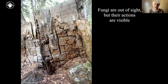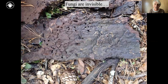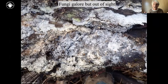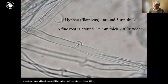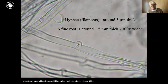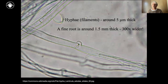Their actions are visible — here we have fungi breaking down a piece of wood into little bits and pieces by breaking down the cellulose. When you look in the forest and flip over a piece of bark, there is fungi galore — a whole microcosm of different fungi growing on the underside. Fungi are basically invisible to us because they're made up of really tiny filaments called hyphae, around five microns thick. A fine root is around half to one and a half millimeters thick — 300 times as wide. We can see roots, but fungal parts are just out of sight.